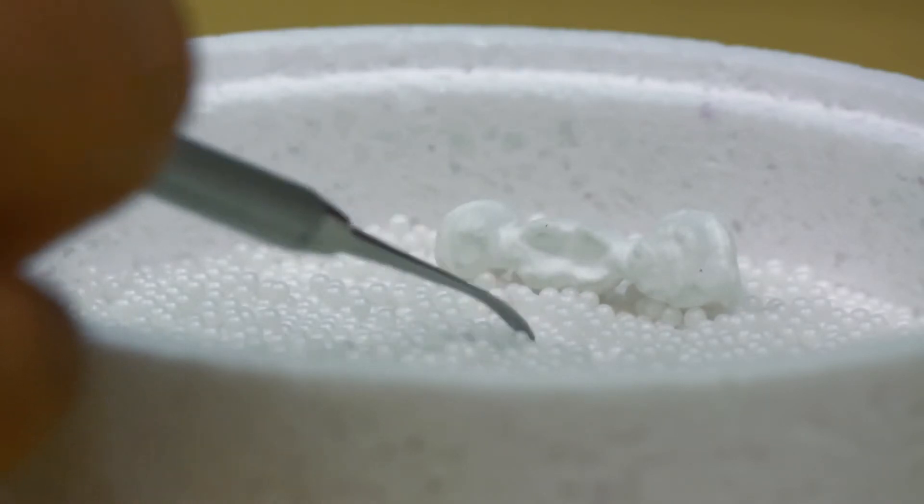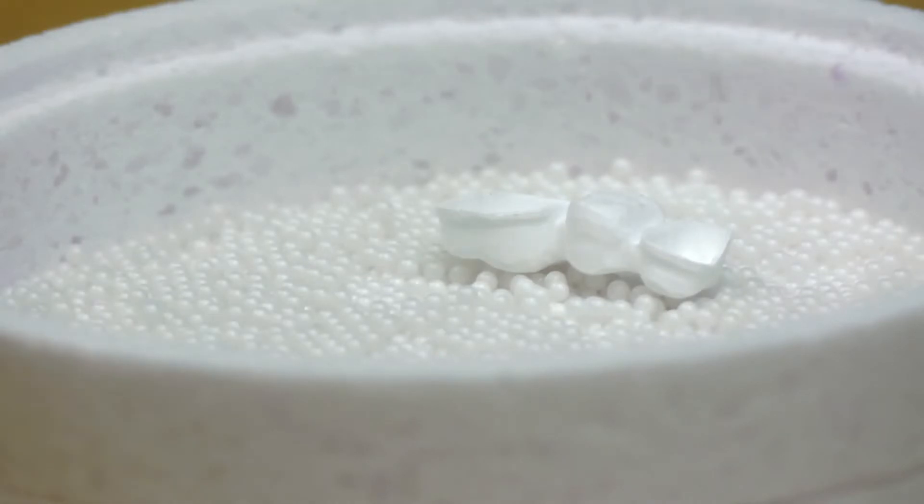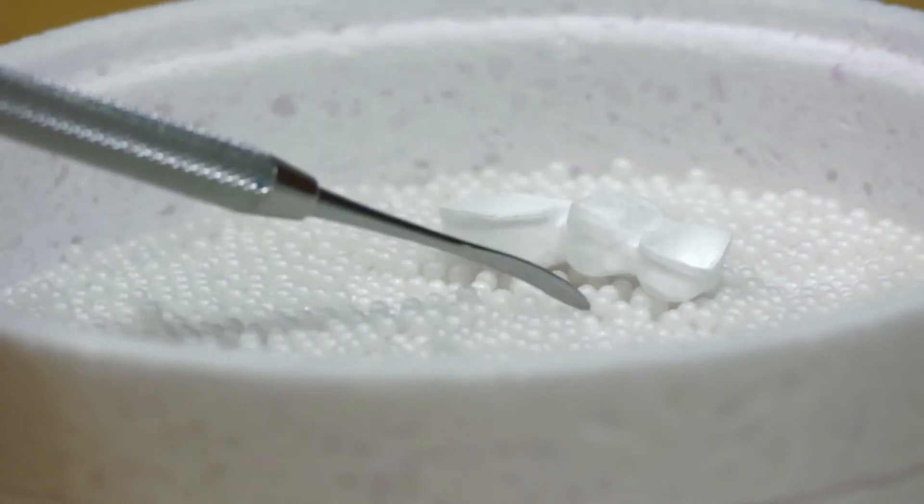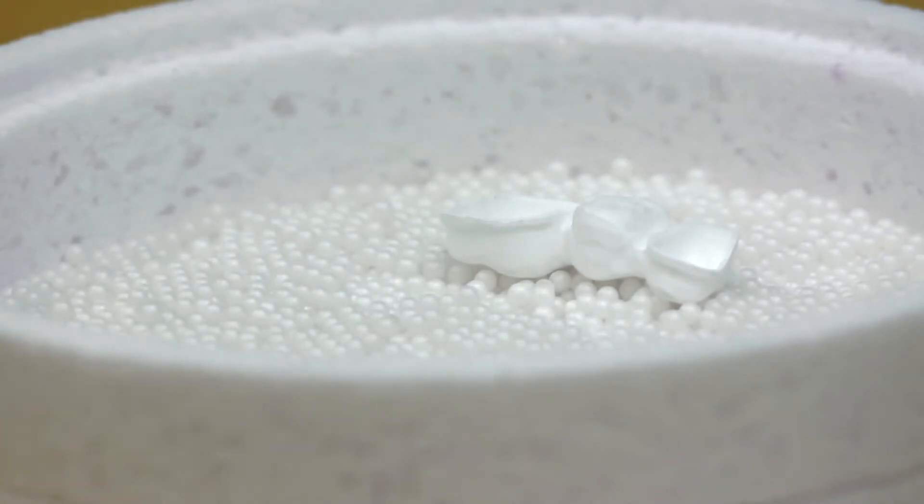Use additional sintering beads to support ends of the restoration which have hollow areas. Support every restoration pontic with at least one sintering bead so that the bridge restorations are adequately supported along the entire length of the restoration and do not lie hollow.